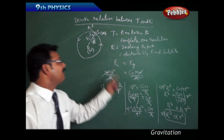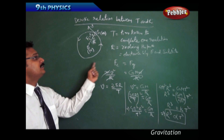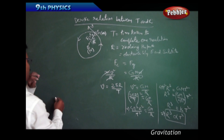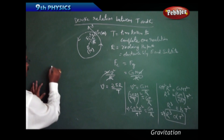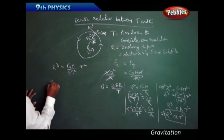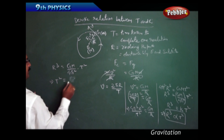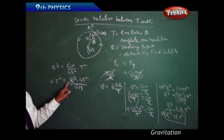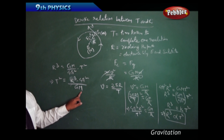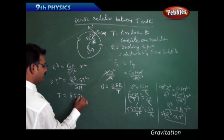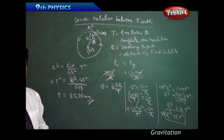Using this R³ ∝ T² relationship, we can find the time of revolution of a satellite rotating exactly at the surface of the Earth. From the expression R³ = (GM / 4π²)·T², we get T² = 4π²R³ / GM. Substituting the radius and mass of the Earth and simplifying, we get T = 84.75 minutes.